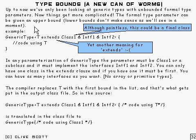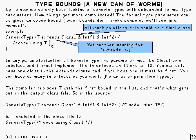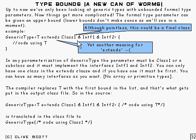You can give the formal type parameter what's called an upper bound. We'll see later on that lower bounds don't make any sense, as I'll point out in a few slides time. Here's what it looks like: it's some sort of generic type with a type parameter T and we put 'extends' in. Then we can have class 1 and interface 1 and interface 2, and as many interfaces as we want, or none at all. And then we write code that's using T just like before.